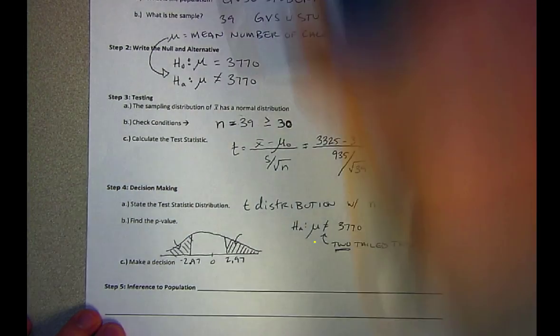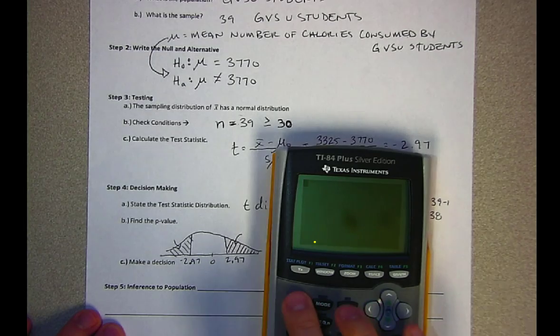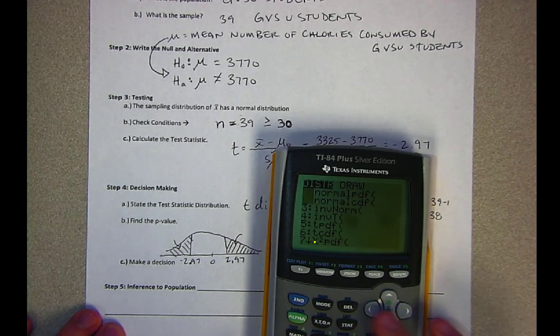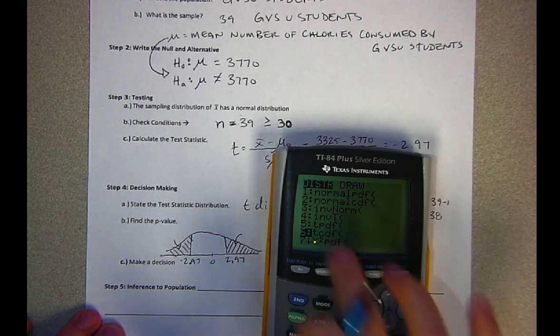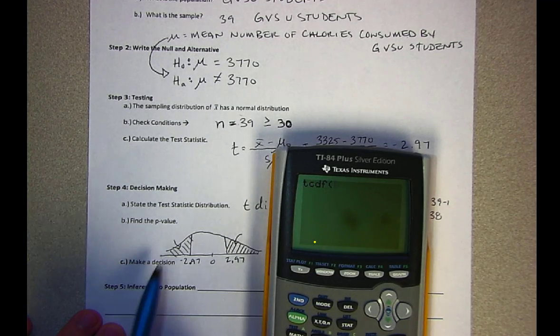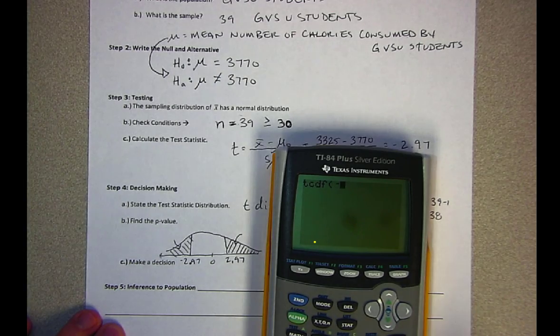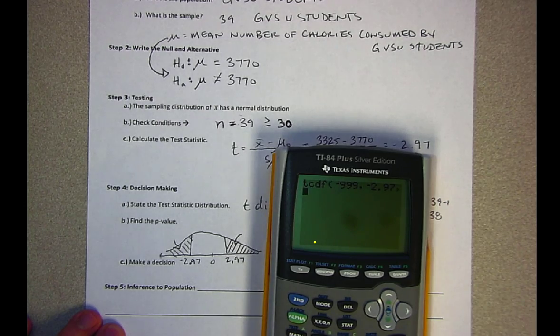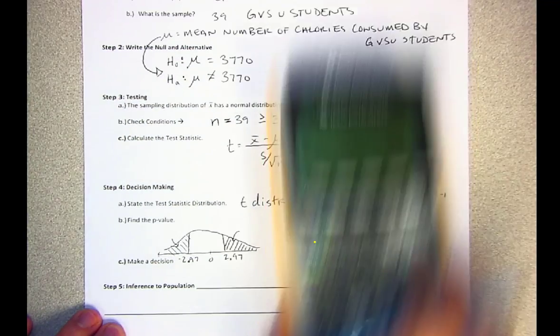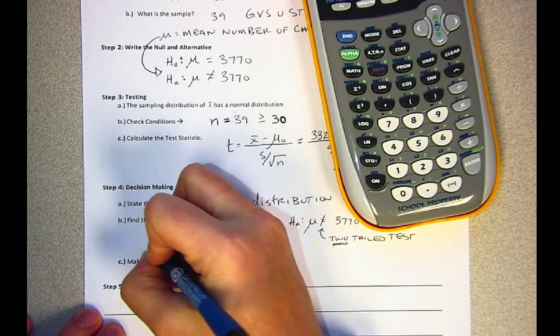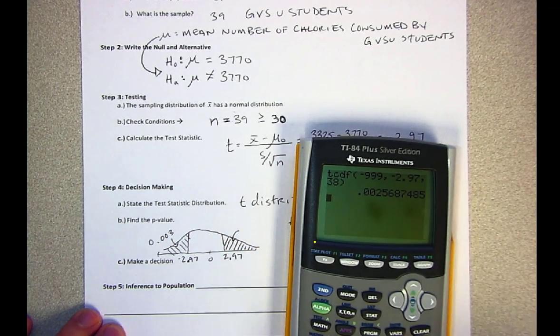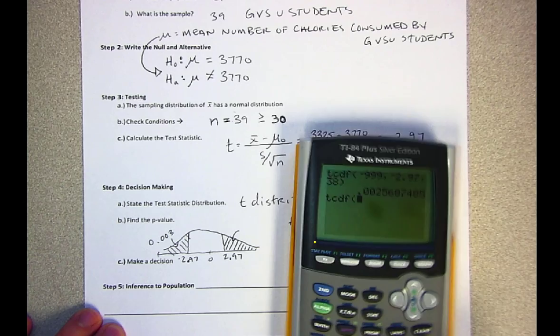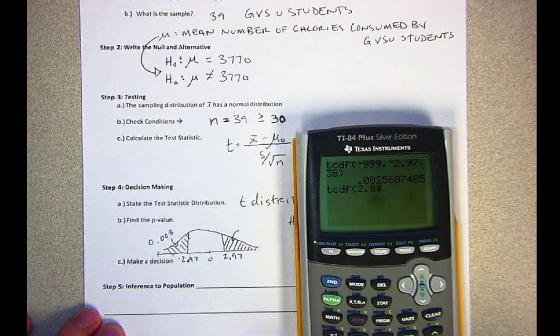There are a variety of ways to find these tails. I can find each of them separately. We're going second and then DISTR. Because we have a t test statistic we're using tcdf. It wants a lower bound or where the highlighting starts, so I can do just this bottom tail first. Then an upper bound or where the highlighting ends, and then my degrees of freedom. That gives me in this section 0.003 if I round. I could also find this top tail. Second, DISTR, tcdf. The highlighting starts at 2.97 and ends at positive infinity, and then 38 degrees of freedom.